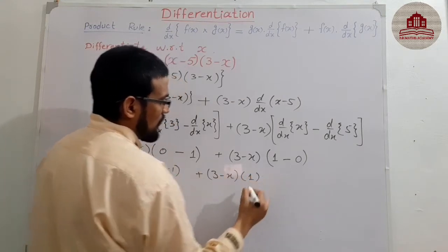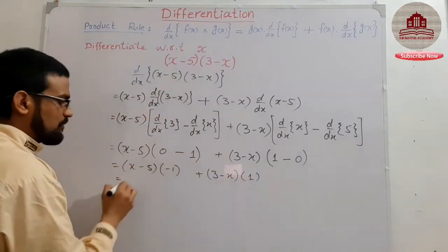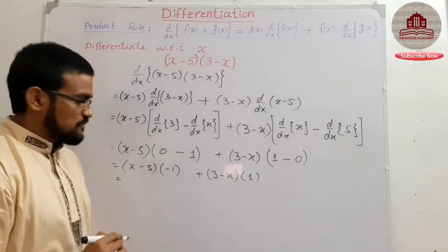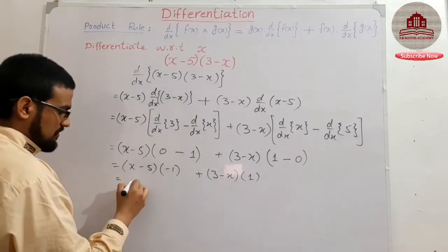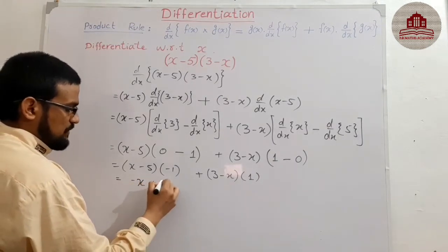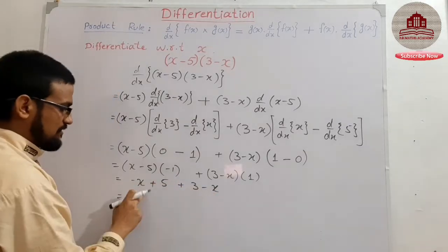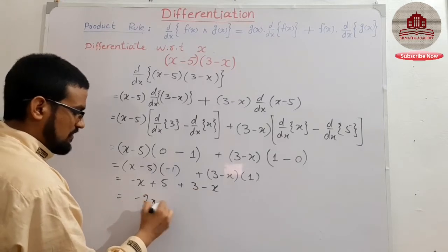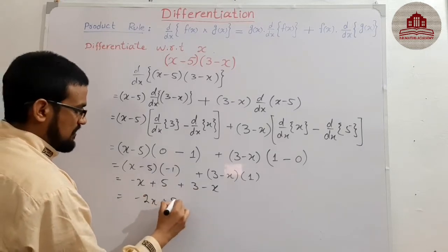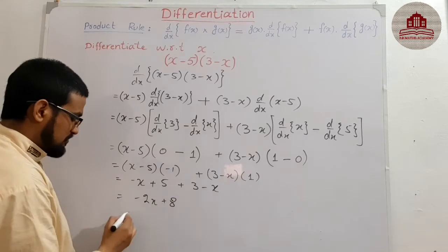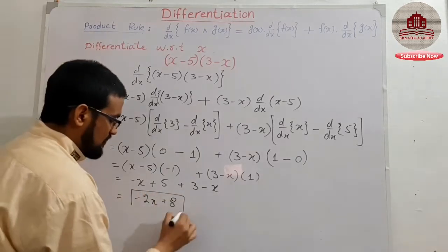1 minus 0 is 1, 1 minus 0 is 1. And multiply, open the bracket, multiply and plus minus, simplify it. -x + 5 - 3, 3 - x, and then final result -x - x is -2x, 5 plus 3 is 8. This is the student final result of derivative of this function.